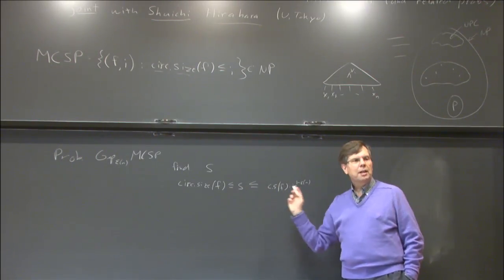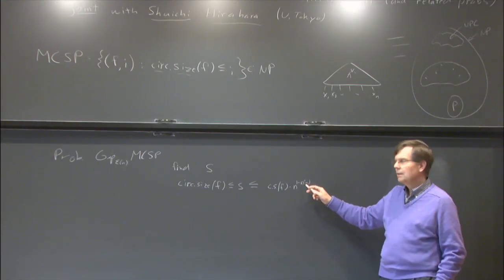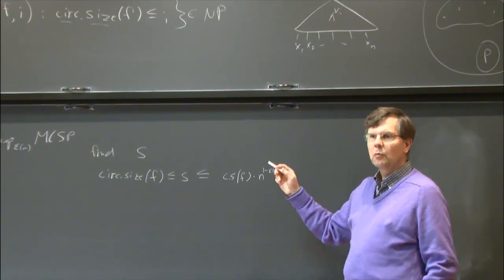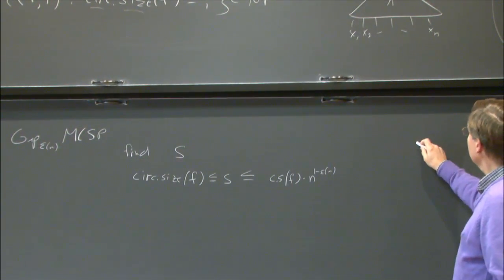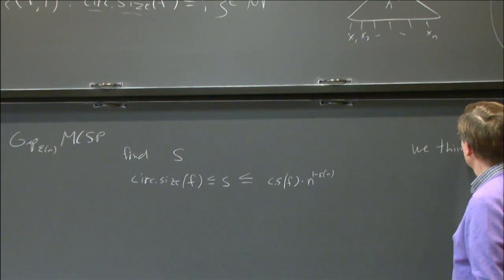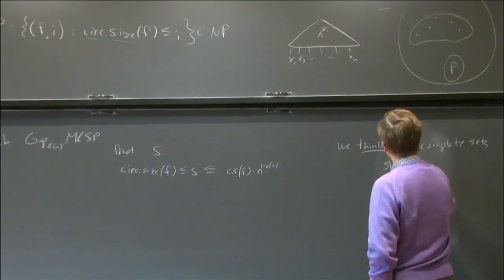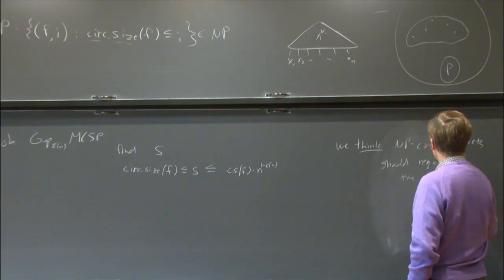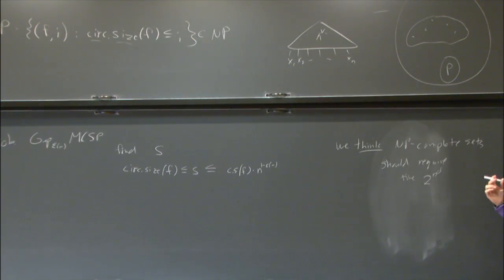So you just want to get a fairly bad approximation. The thing to notice is that if epsilon gets smaller, this is going to be easier to do. In particular, if epsilon is little-o of 1, you wouldn't expect this to be NP-complete. That's because we think NP-complete sets should require time at least 2 to the n to the delta for some delta bigger than 0.